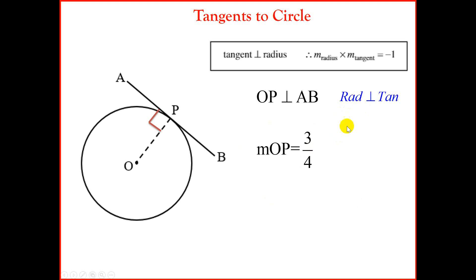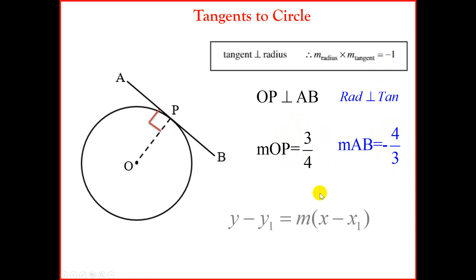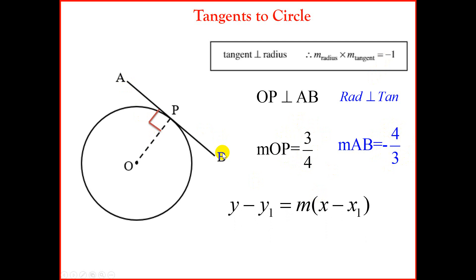For example, if the gradient of the radius OP is 3 over 4, this implies that the gradient of the tangent would be negative 4 over 3. If you multiply these gradients together you get minus 1. Now remember a tangent is a straight line, so the equation of a straight line is y minus y1 equals m times x minus x1. We need two things: the gradient of the tangent and a point on the tangent.